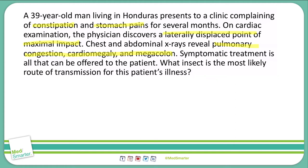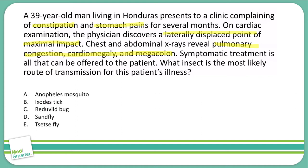We're looking for something that causes pulmonary congestion, cardiomegaly, and megacolon — that cardiomegaly is what's laterally displacing the point of maximum impact. He's also having constipation and stomach pains. So we're looking for an organism transmitted by an insect. The answer choices are: A) Anopheles mosquito, B) Ixodes tick, C) Reduviid bug, D) Sand fly, or E) Tsetse fly. Take a minute, come up with your answer, and write it in the comments below.